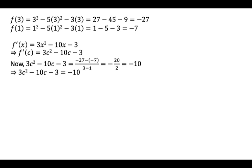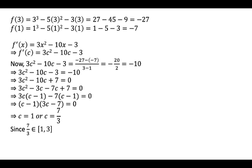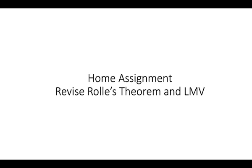So 3c² − 10c − 3 = −10, which gives 3c² − 10c + 7 = 0. We find the value of c by splitting the middle term, getting the two factors (c − 1)(3c − 7) = 0. So c = 1 or c = 7/3. Since 7/3 belongs to the open interval (1, 3), c = 7/3 such that f'(7/3) = [f(3) − f(1)] / (3 − 1).